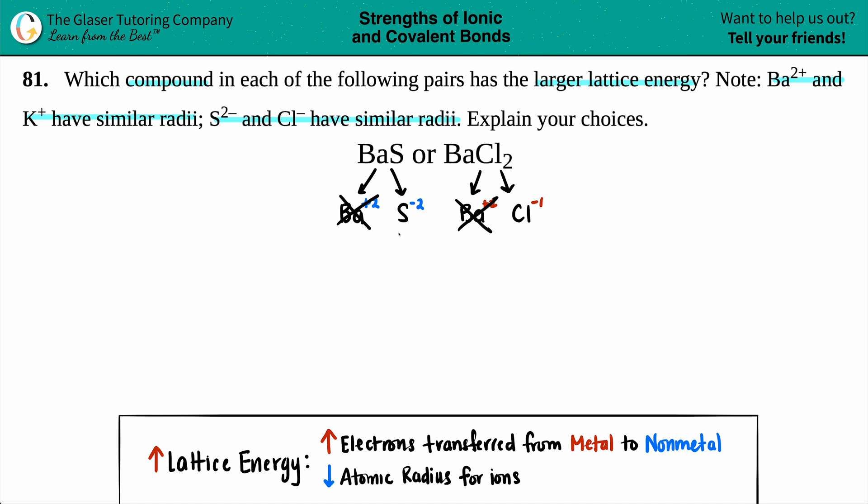They did state up here that sulfur and chlorine have very similar radii. You might be saying, well why does that matter? It turns out that lattice energy changes are highly correlated with two properties, and one of them is the changing atomic radius of the ions.